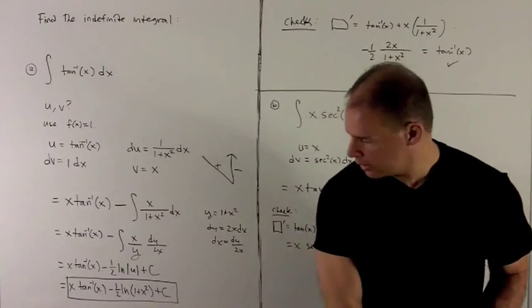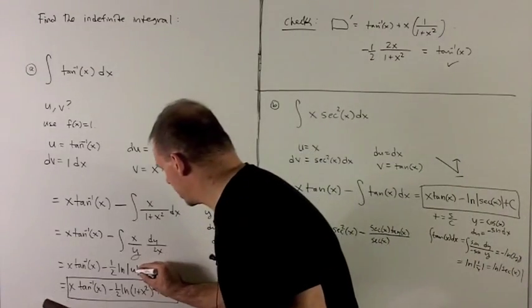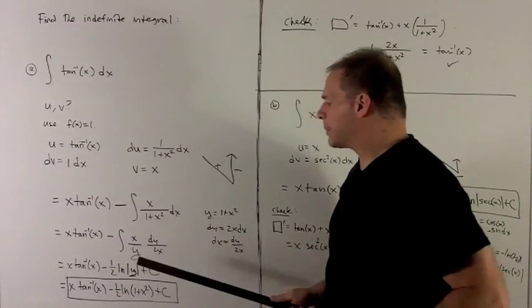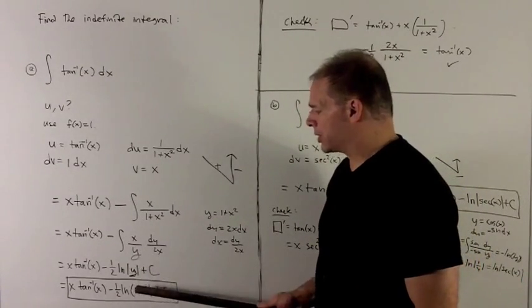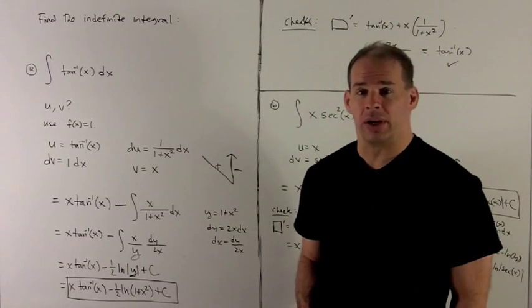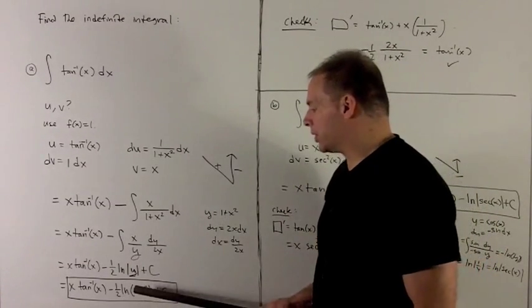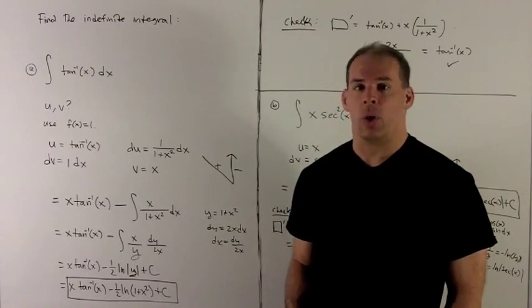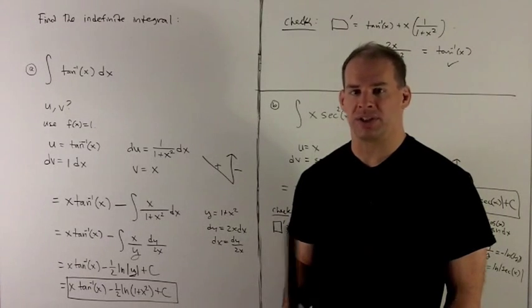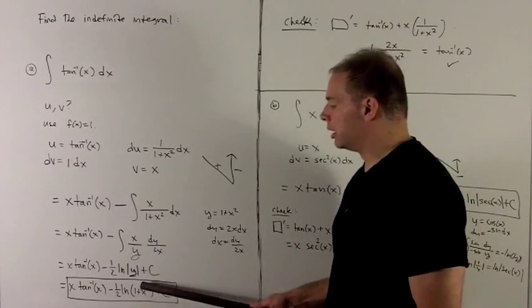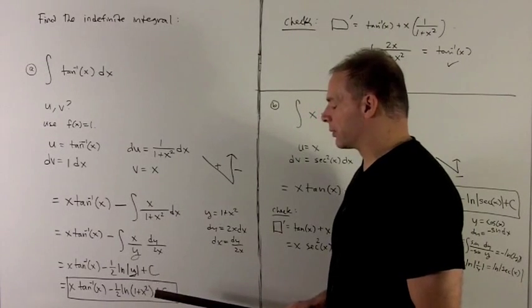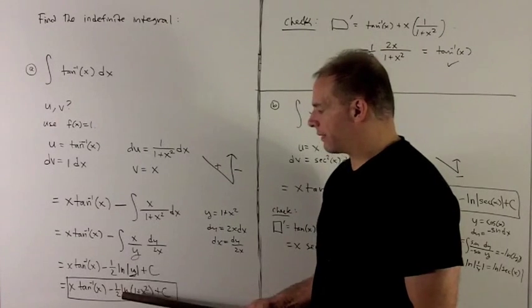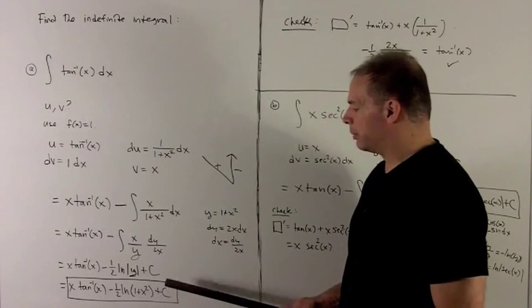Its antiderivative is natural log of absolute value of y. So we get to here. And then we just put in one plus x squared where I have y. We can lose the absolute value signs because if I take x squared, that gives me a number bigger than or equal to zero. And if I add one to it, that gives me a number bigger than or equal to one. So the absolute value of that thing is always going to be just the number itself because it's always a positive number going in. So absolute value signs get thrown away and I'm left with x tan inverse x minus a half natural log 1 plus x squared plus a constant.